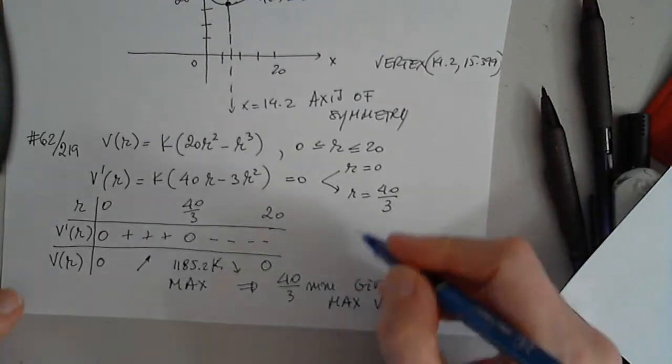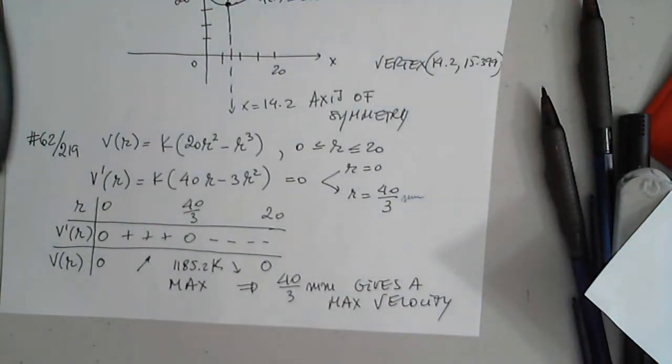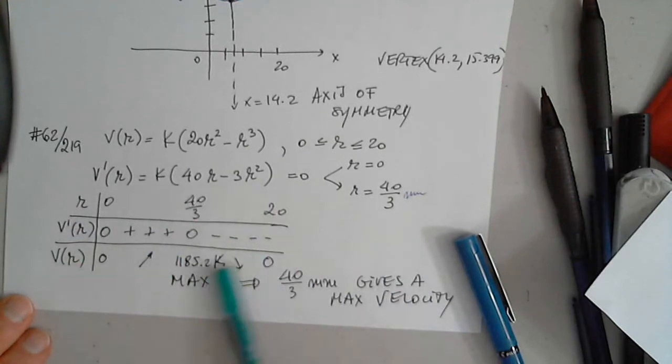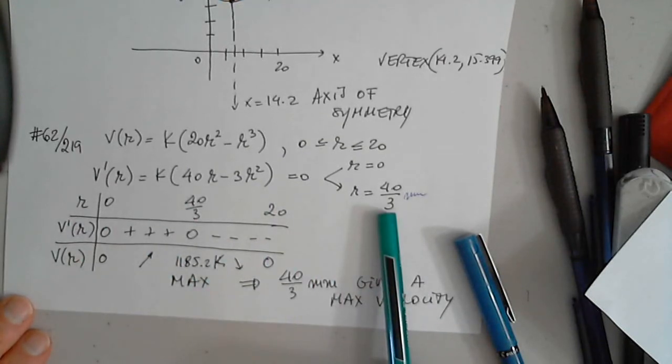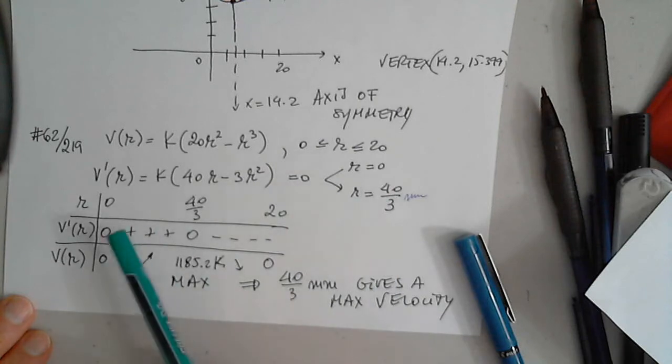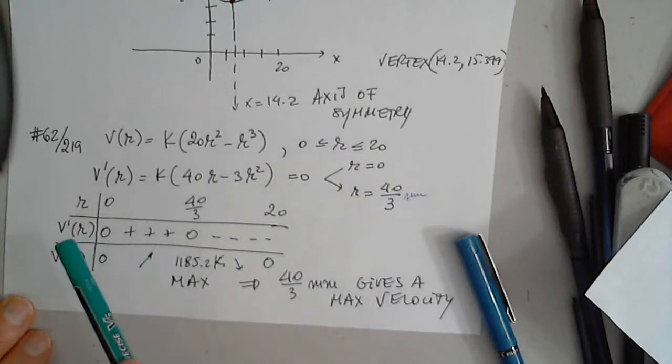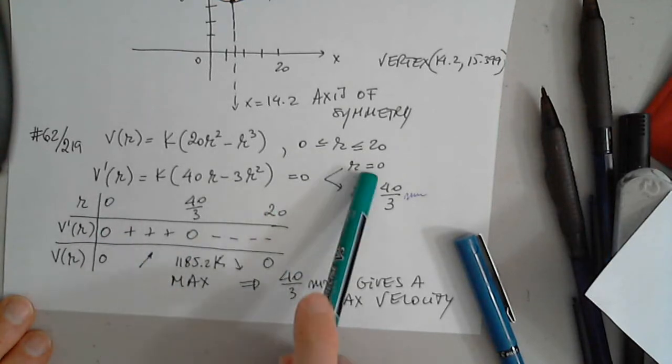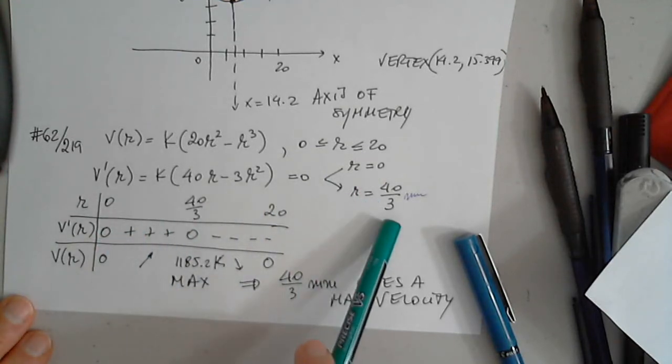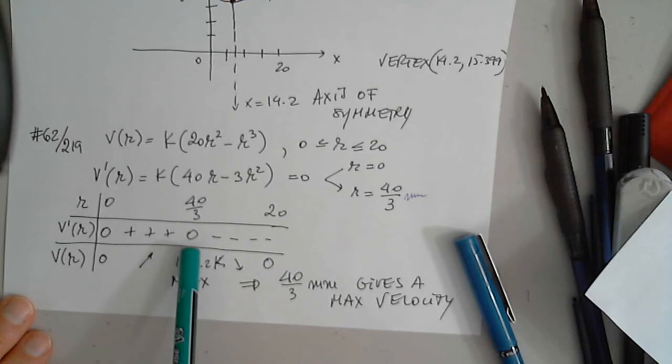And of course, this is in millimeters. It's right here. That's not sufficient. I have to show that this gives a maximum. So on 0 to 20, that's the domain of the function given to us. At 0, the first derivative is 0. At 40 over 3 is 0 as well.